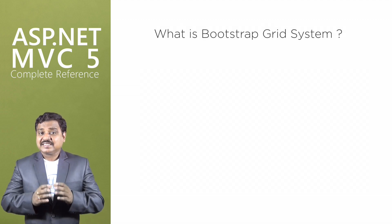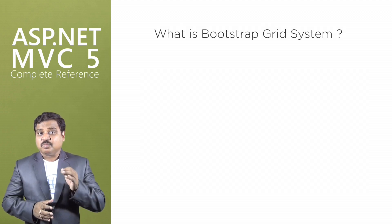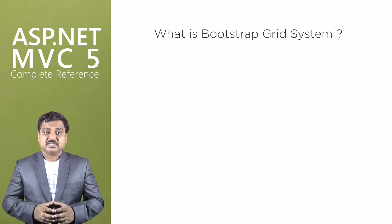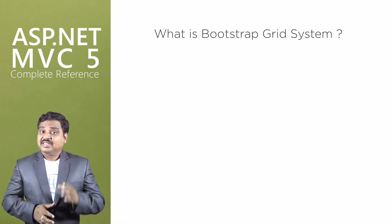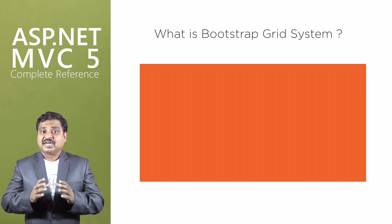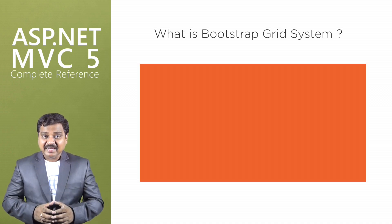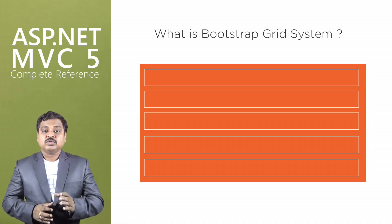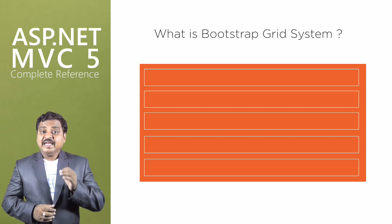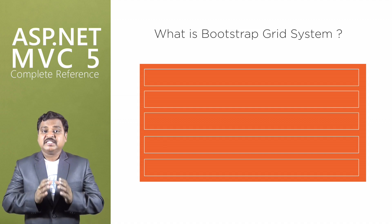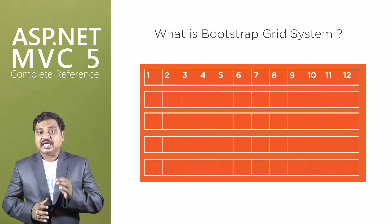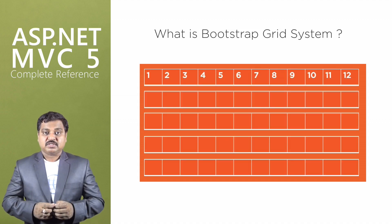Now let us understand the Bootstrap grid system. The grid system starts with a container which consists of rows, and each row will consist of 12 equal columns.